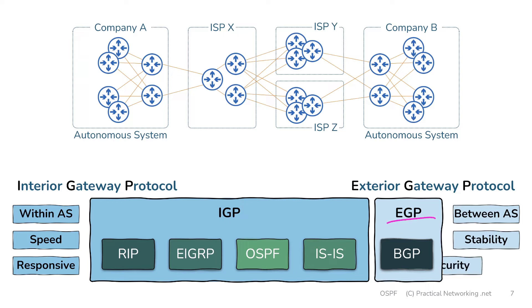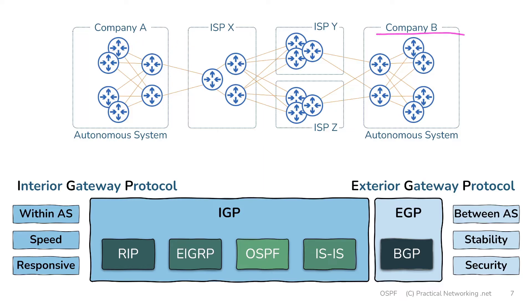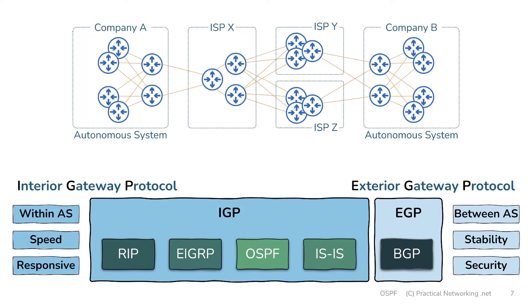Moreover, exterior gateway protocols are also tuned for security and control. With BGP, an ISP might know the IP address space that company A owns and only accept routing advertisements from company A that belong to that particular IP address space. If company A tried to do something malicious and advertise that it owns company B's IP address space, the internet service provider would know about it and reject those routes. Some IGPs do have methods of filtering routes, but not nearly to the degree that an exterior gateway protocol like BGP does.